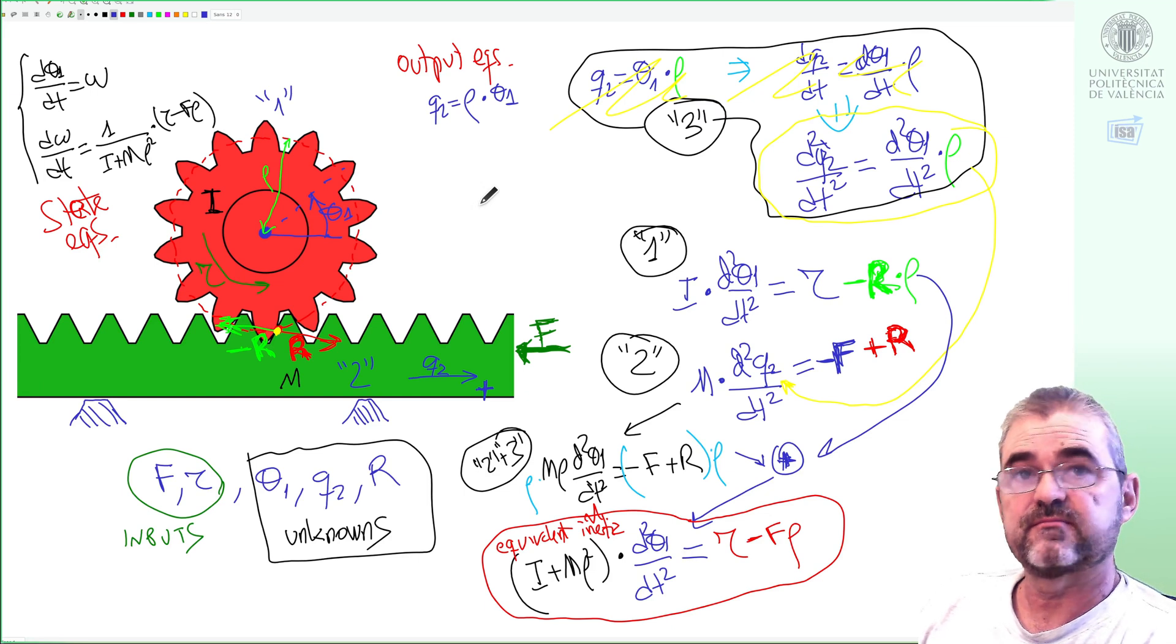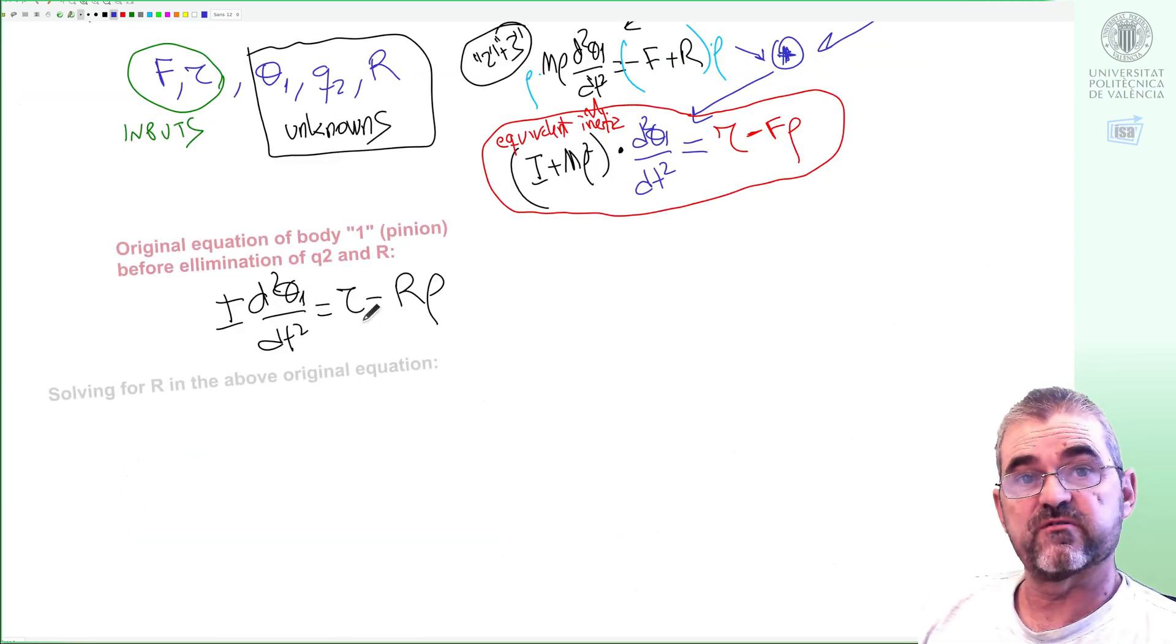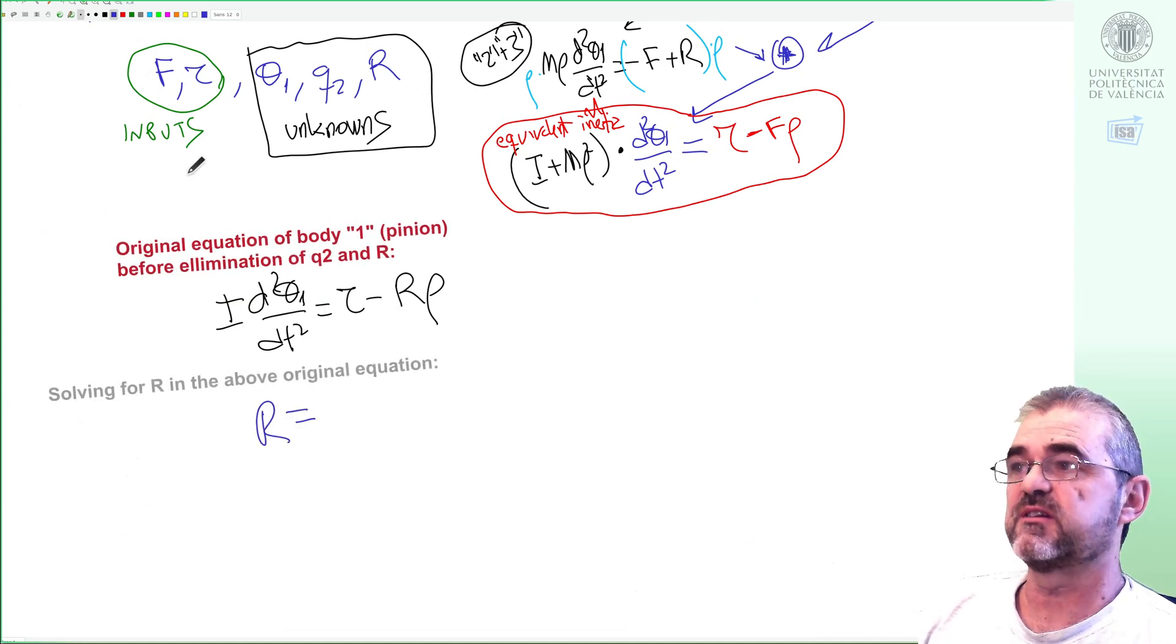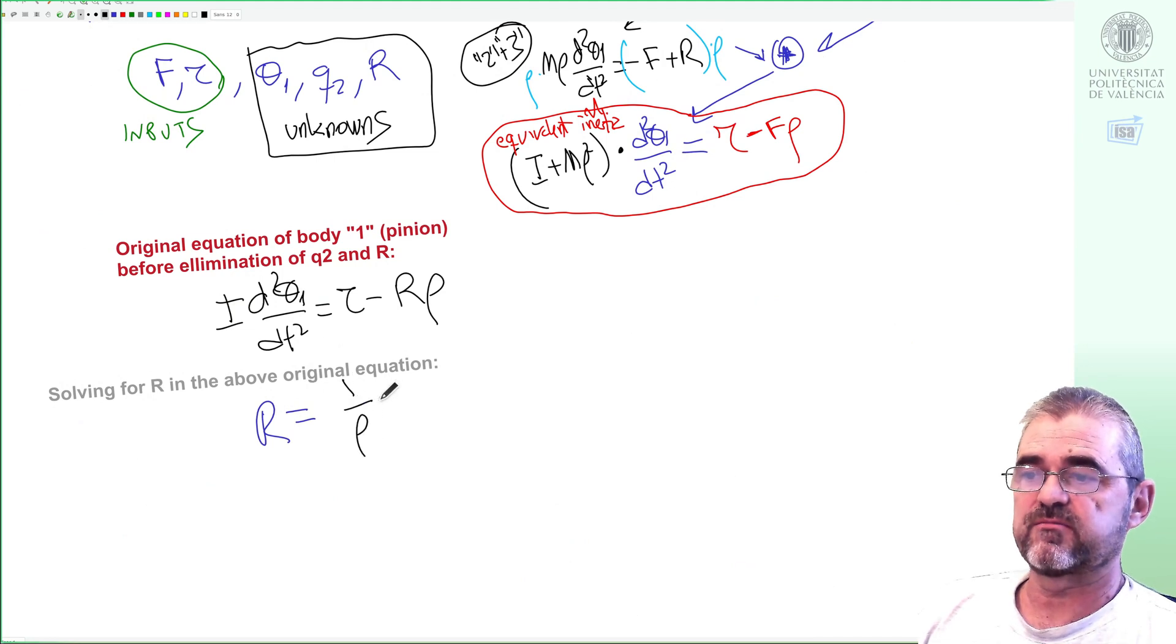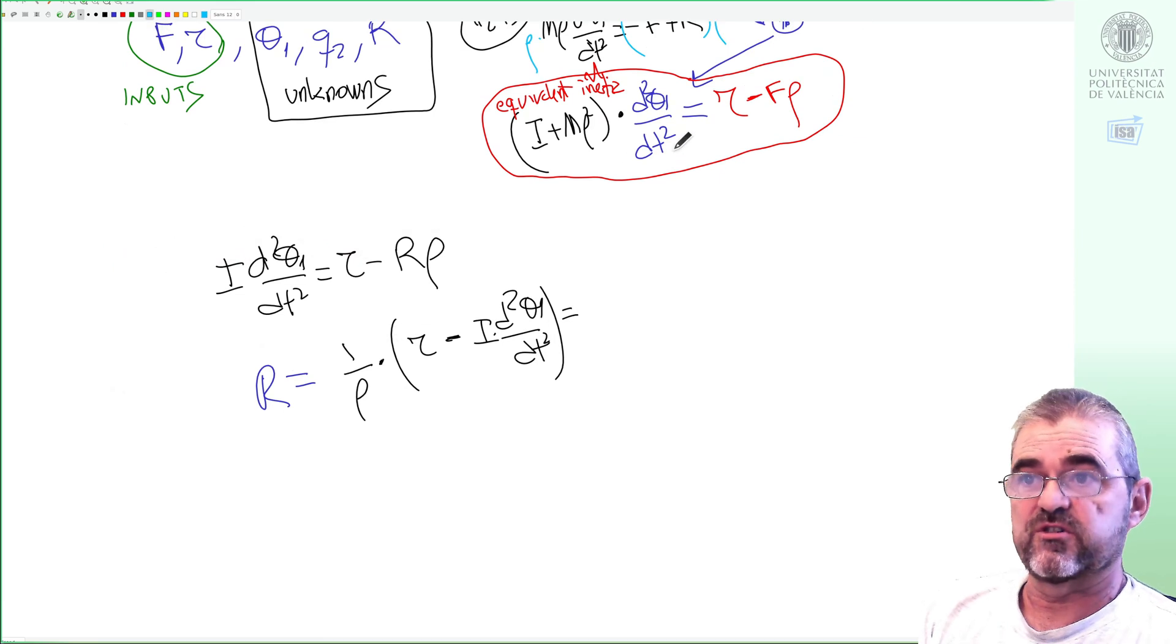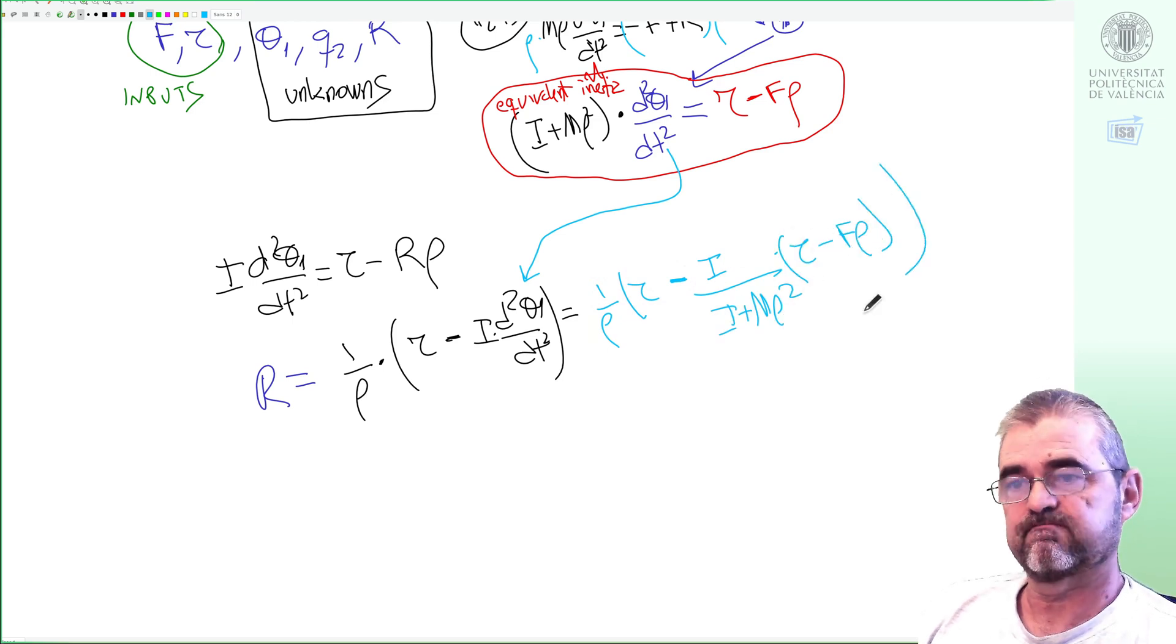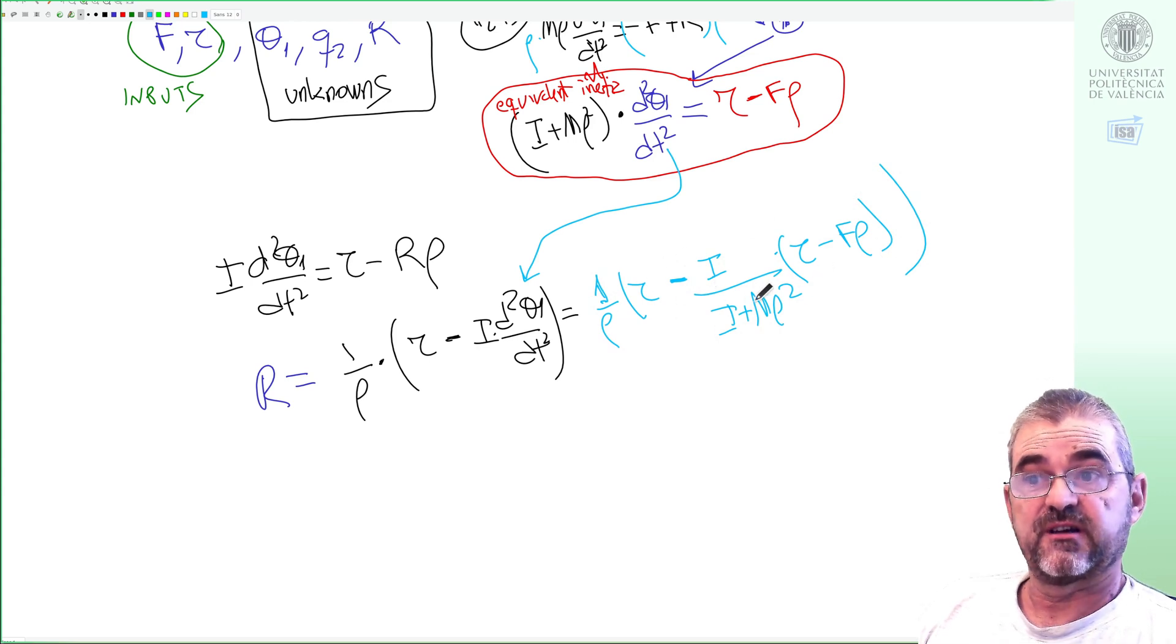If I move down, the original equation with the reaction force was this thing. So basically the reaction force is equal to one divided radius, one divided radius. But the equation of the angular acceleration in the overall model I just deduced that it was this one.